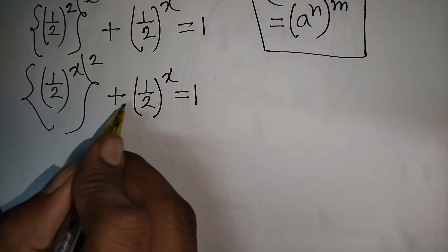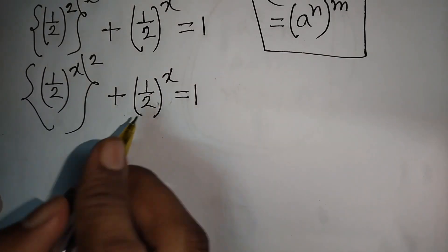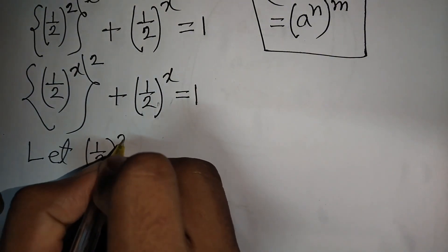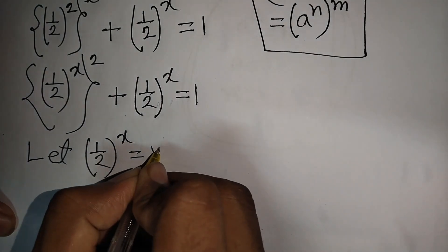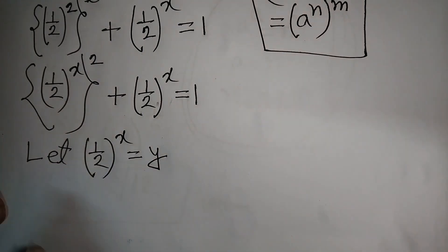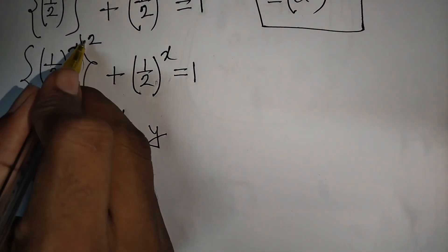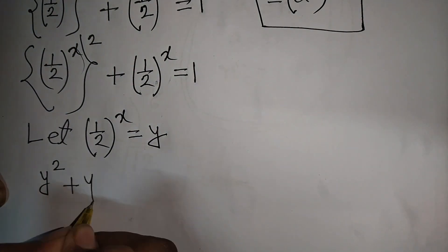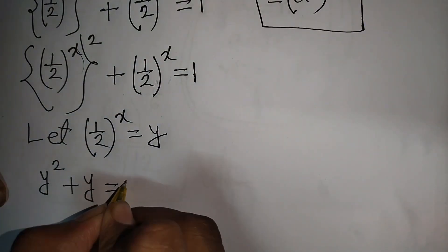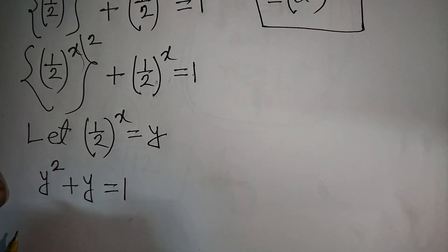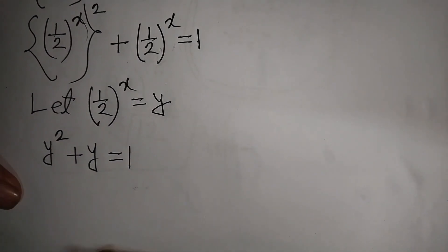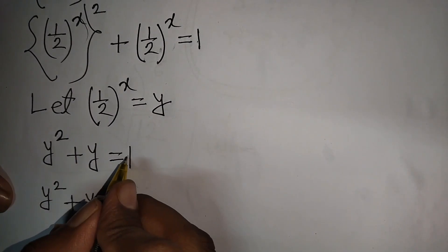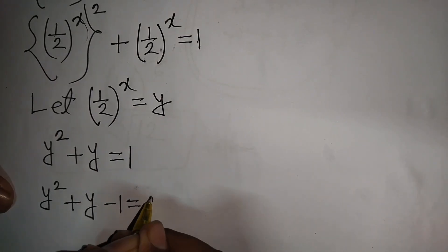We see (1/2)^x appears in both terms. Let y = (1/2)^x. Substituting, our equation becomes y² + y = 1, or y² + y - 1 = 0.